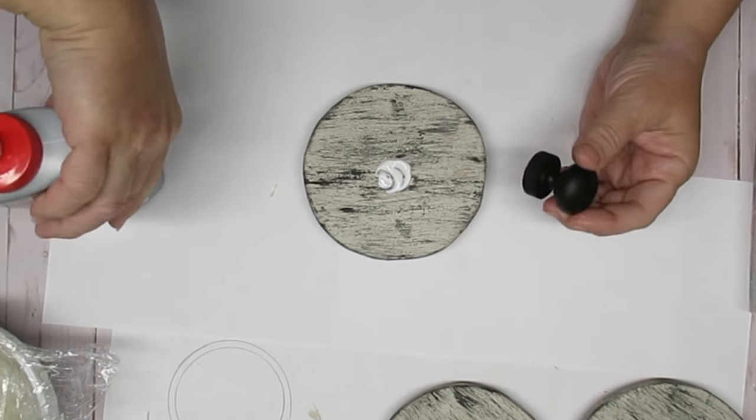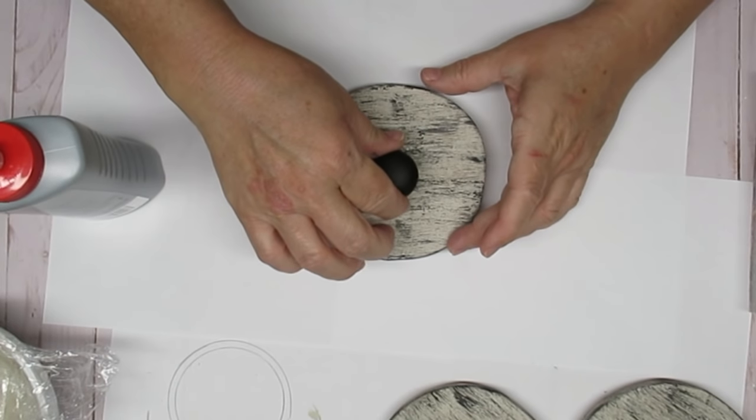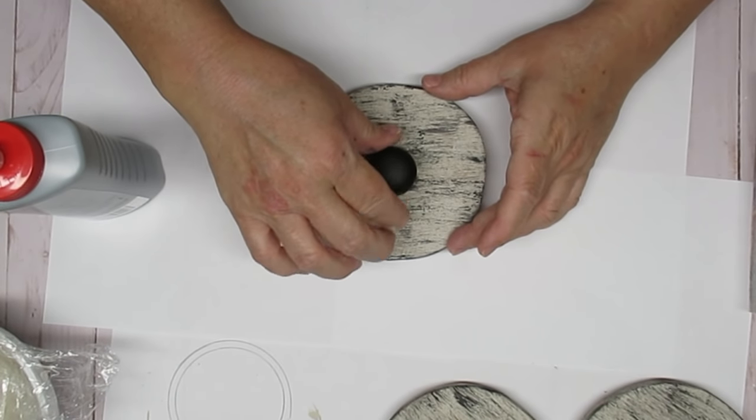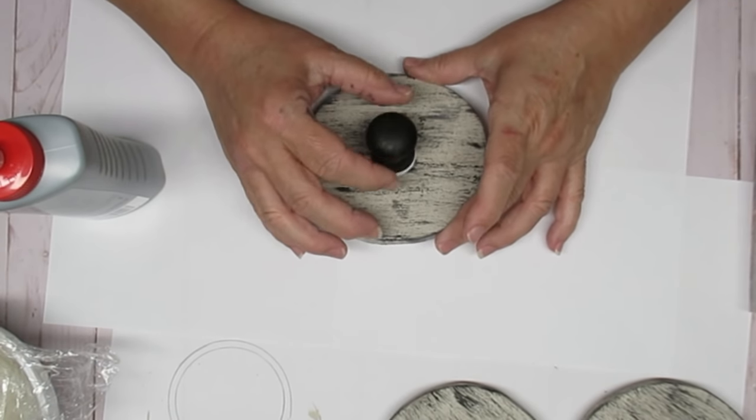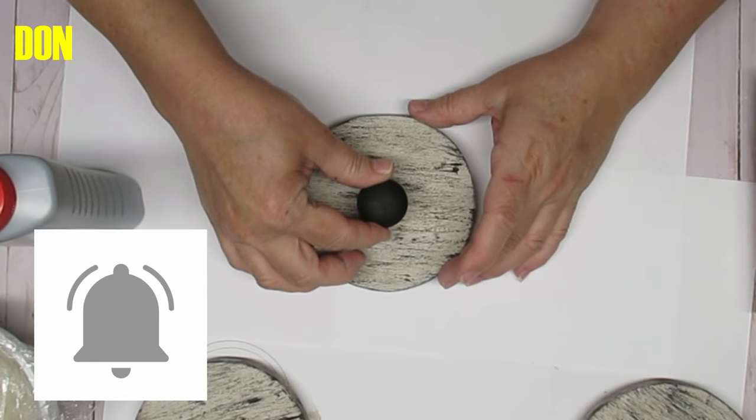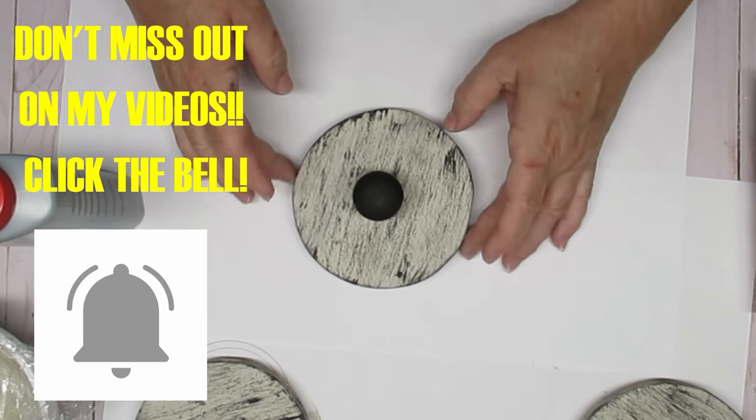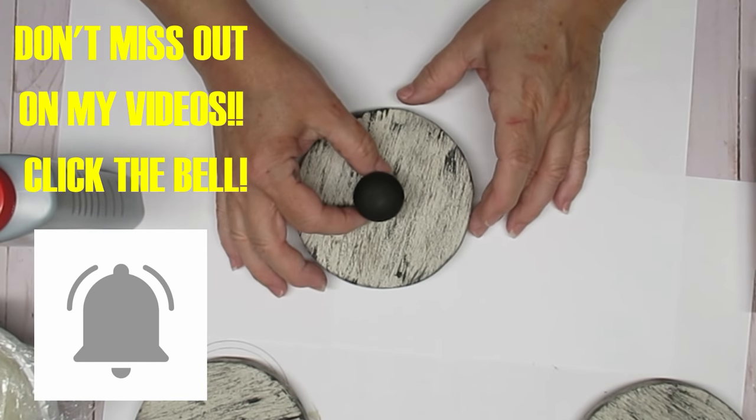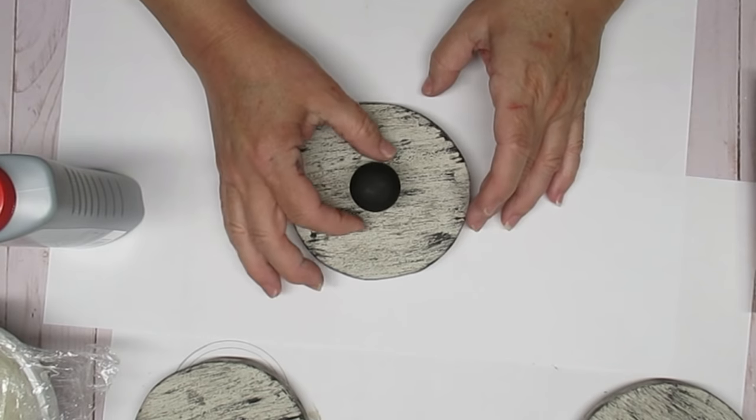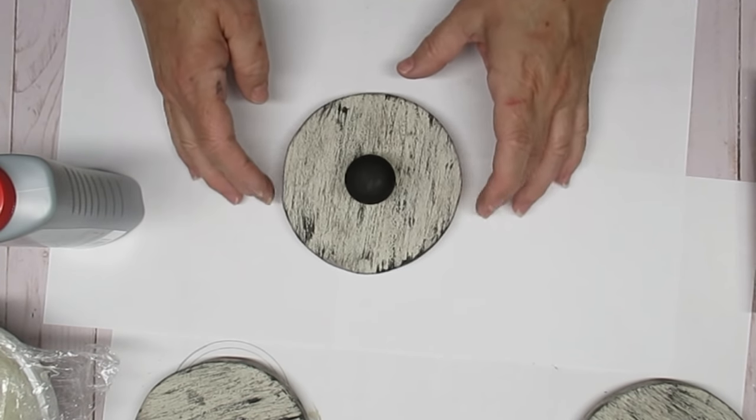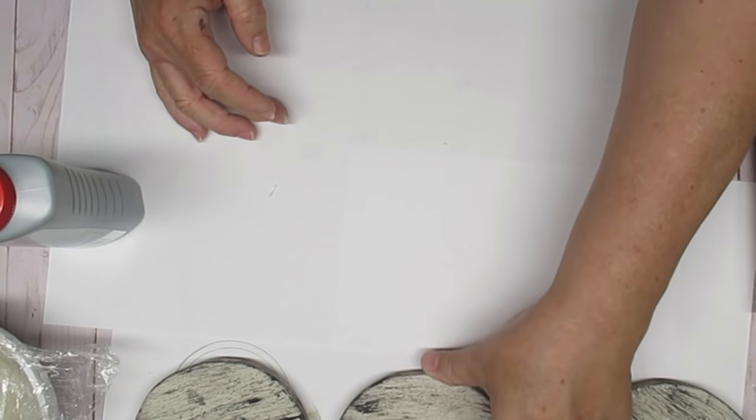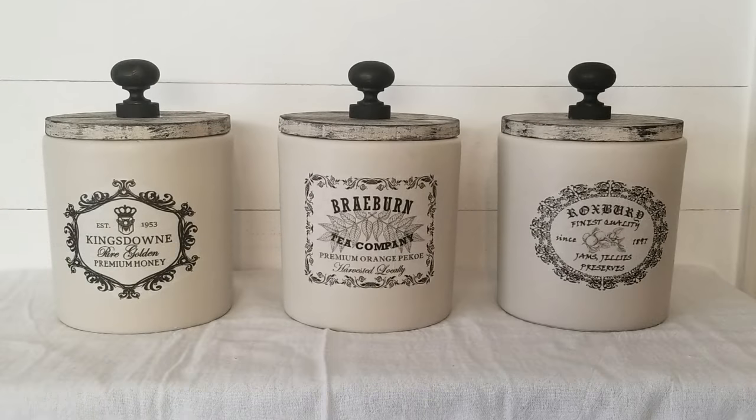All the paint is good and dry, so now it's time to assemble the knob on the lids. Again, I'm using my weld bond glue because that will give me a permanent hold. I can't believe how these turned out. My vision came to life. I'm so happy with them. They're absolutely gorgeous, and from toilet brush holders, oh my gosh, you've got to start looking outside of the box when you're hitting those dollar stores.